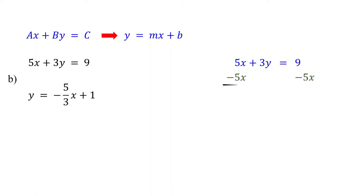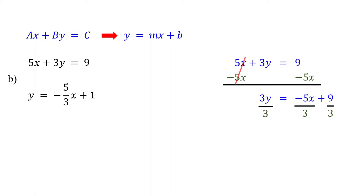Start by subtracting the x-term from both sides. On the left side, these cancel out, leaving 3y. On the right side, you get negative 5x plus 9. Then divide both sides by 3 to isolate y. These cancel out, leaving y by itself. 9 divided by 3 is 3. Now the first equation is in slope-intercept form.